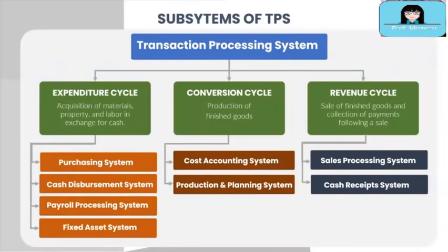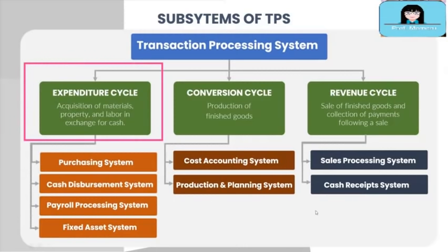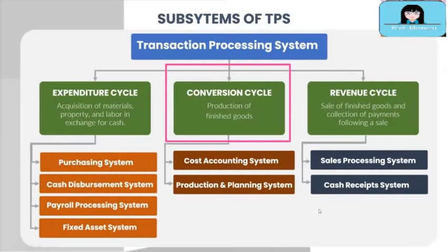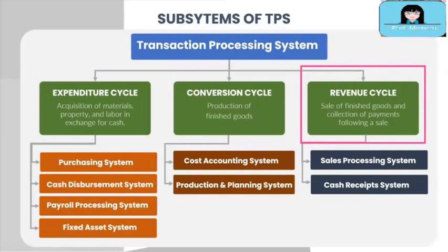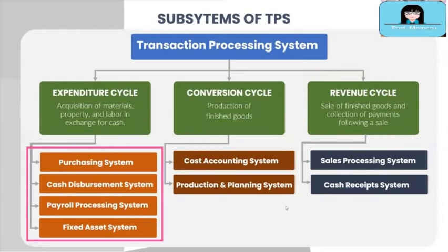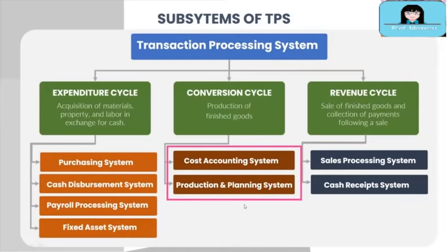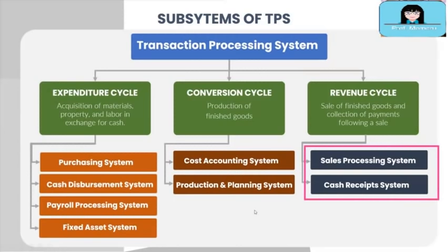Now let's discuss the subsystems of TPS. TPS is divided into subsystems: the expenditure cycle, conversion cycle, and revenue cycle. Each cycle has subsystems too. The expenditure cycle has the purchasing system, cash disbursement system, payroll processing system, and fixed asset system. The conversion cycle has the cost accounting system and production and planning system. The revenue cycle has the sales processing system and cash receipts system. We will take a quick look at each of those subsystems; detailed discussions are in separate modules.